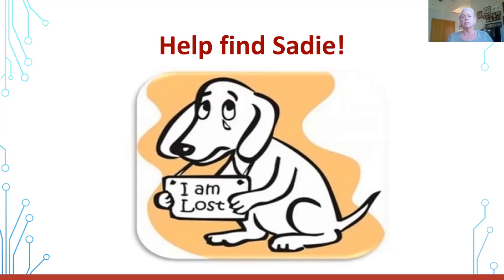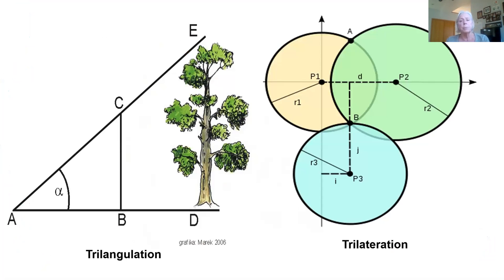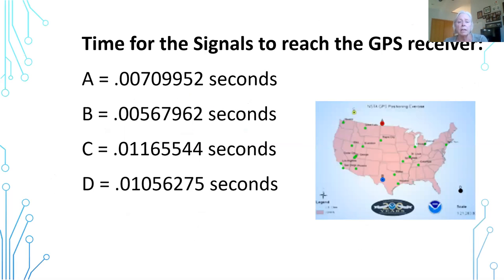We're going to try to find Sadie — a lost puppy who happens to have a GPS receiver on her. Students are given that large map, and it's important to point out to them the difference between triangulation and trilateration. Triangulation is what you'd use — the trigonometry, for example — to find the height of a tree, or where to put a cannonball to knock down castle walls. Trilateration is slightly different. In this case, we're going to use four satellites and the time it takes for a receiver to get a signal from those satellites — A, B, C, and D.